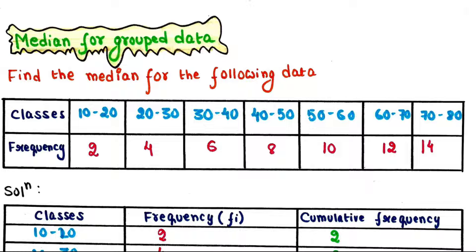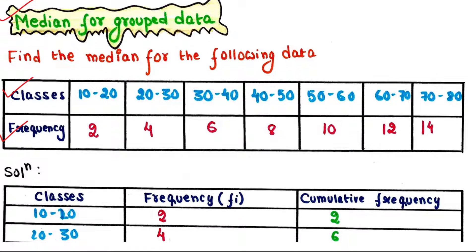Now let's see how we can detect median for grouped data. In this example, find the median for the following data. In this table we have classes in one row and the frequency of each class in another row. Let's find the solution.